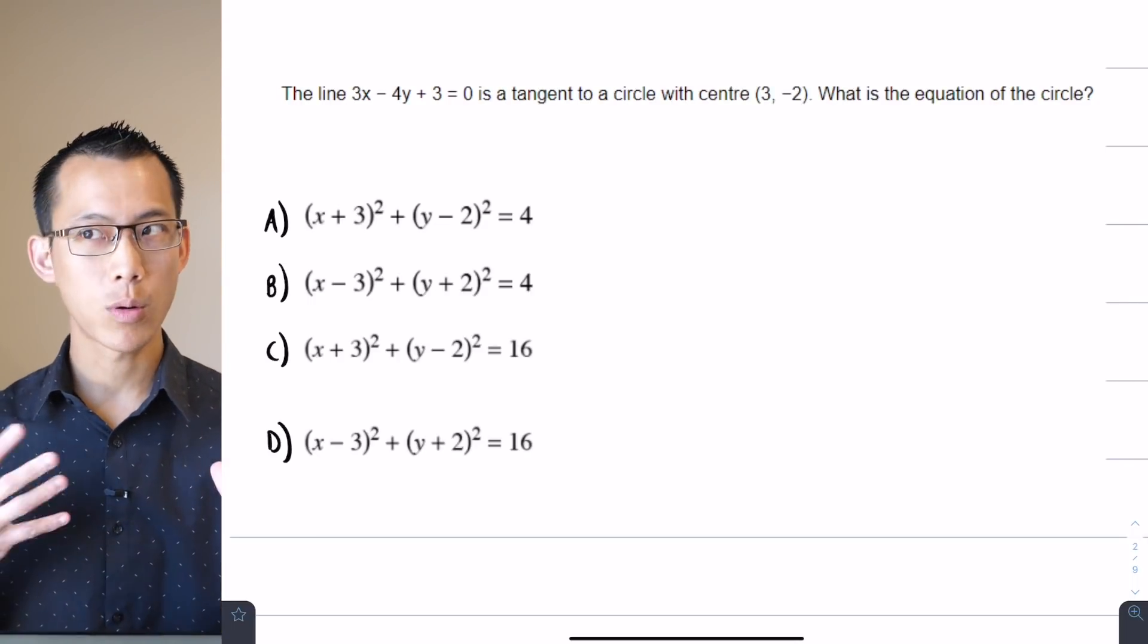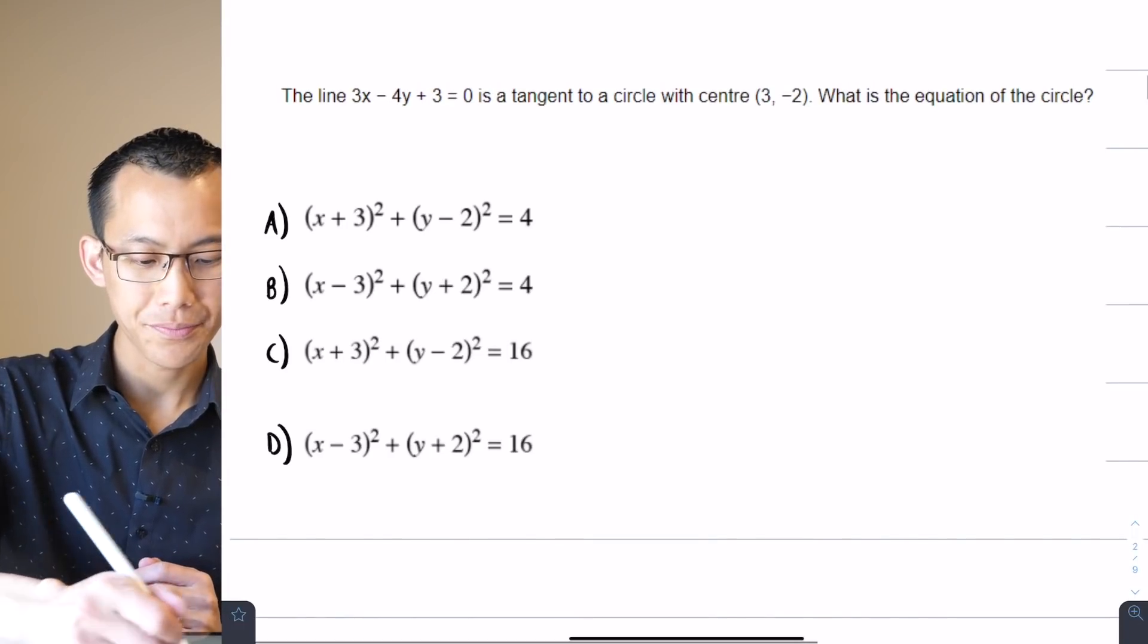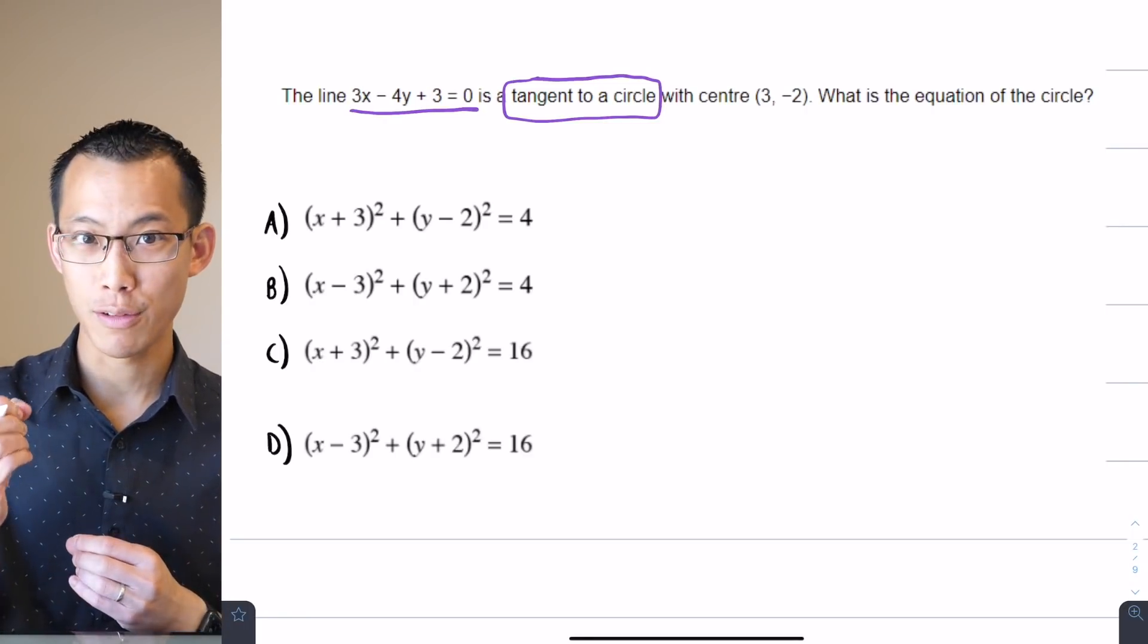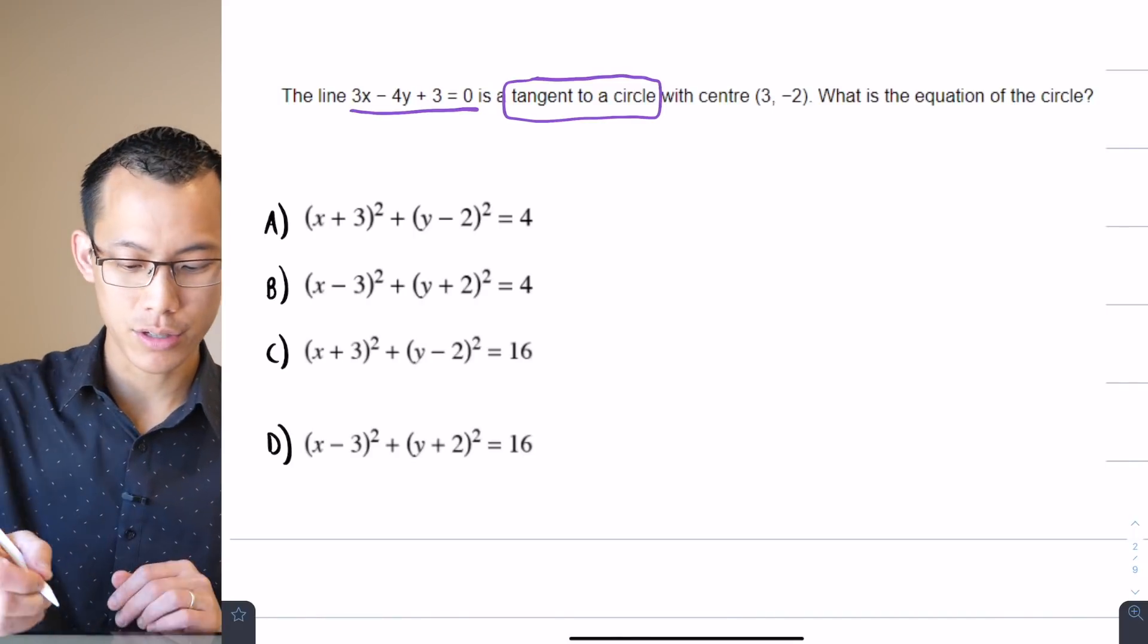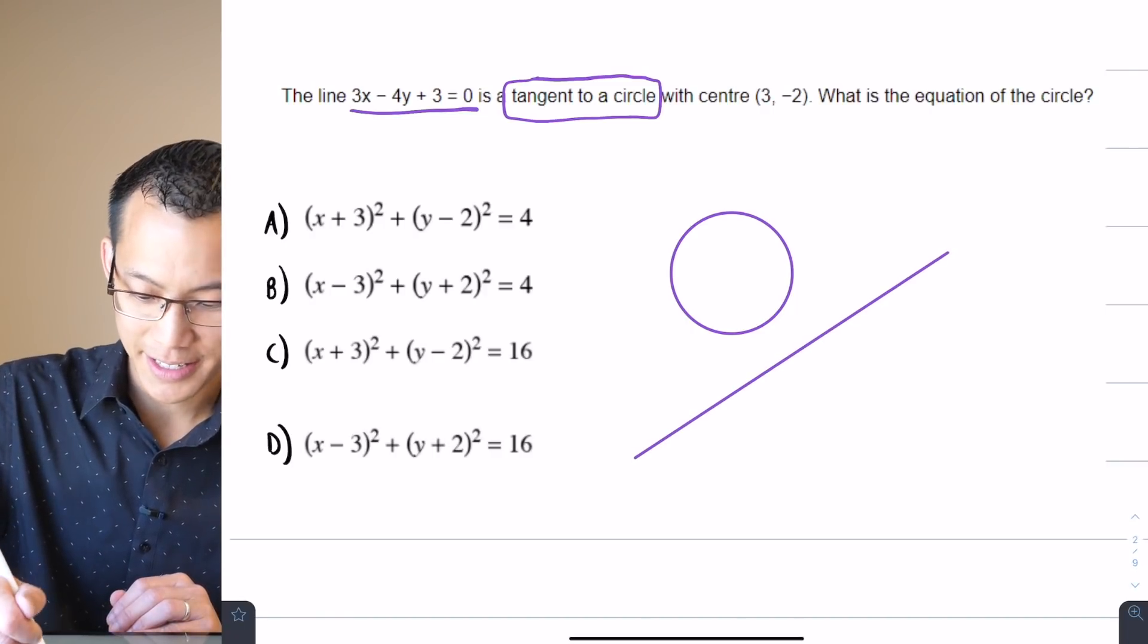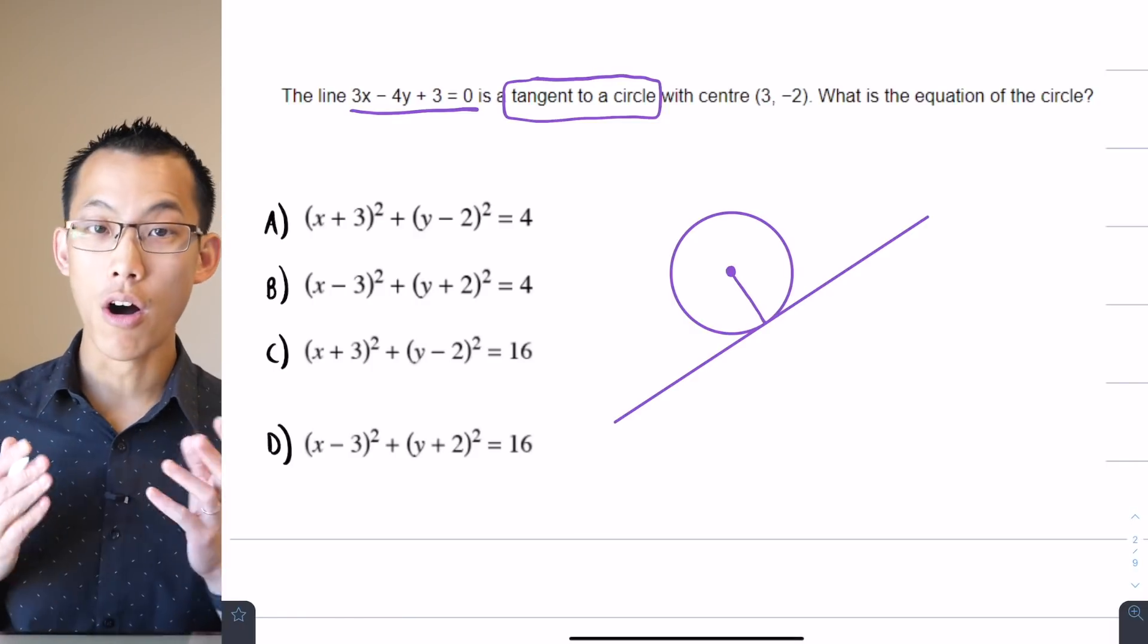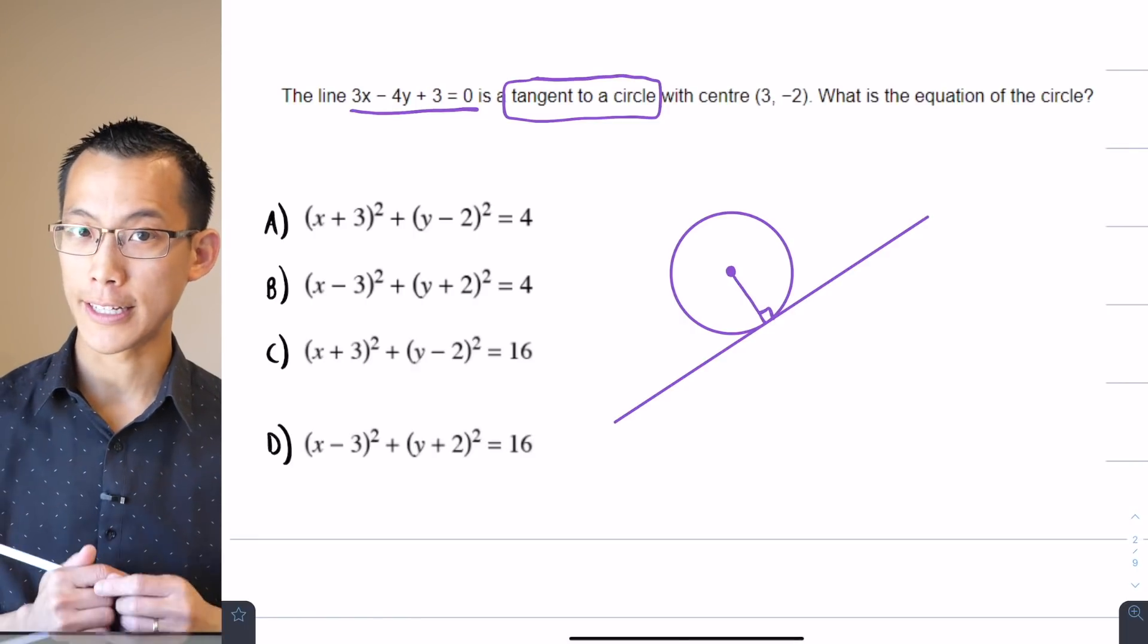All right, now to begin with this longer method requires a few bits of knowledge that you might not be familiar with. For starters, you have to know that when you've got straight lines, this straight line here is a tangent to the circle. So you need to know that tangents to circles have a very particular relationship when it comes to their angle. Tangents are perpendicular to the radius of the circle at the point of contact.